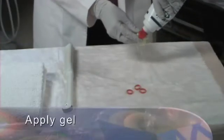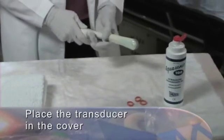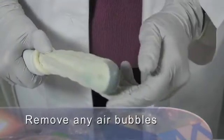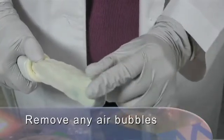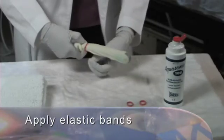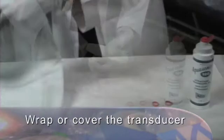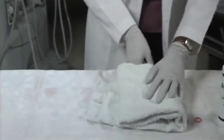Apply gel inside the transducer cover, and place the transducer cover onto the transducer. Check carefully and remove any air bubbles that are between the transducer face and the transducer cover. Some labs use elastic bands to secure the cover. When done, wrap or cover the transducer until ready for use.